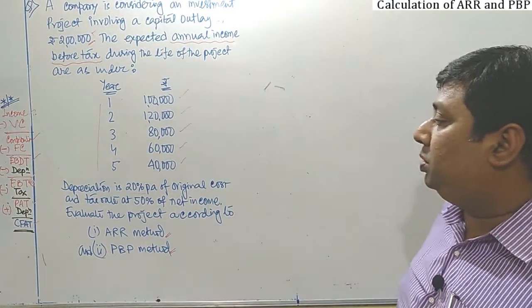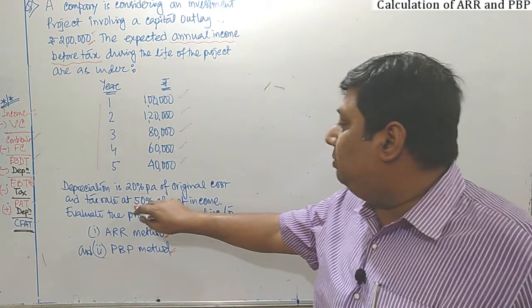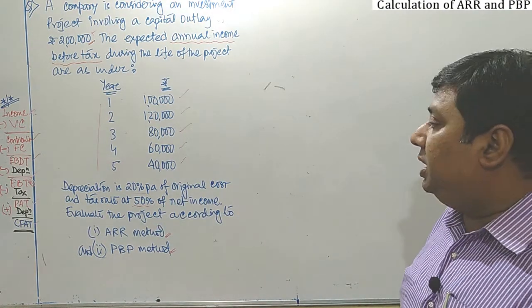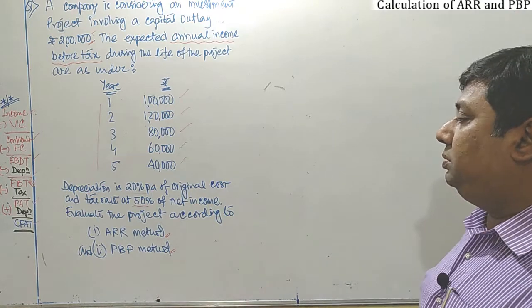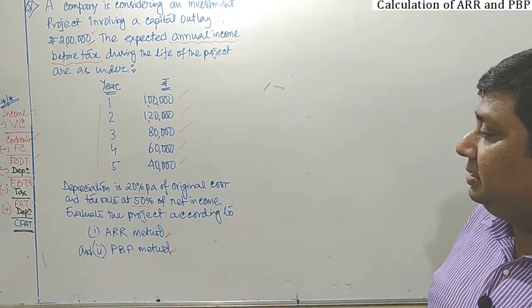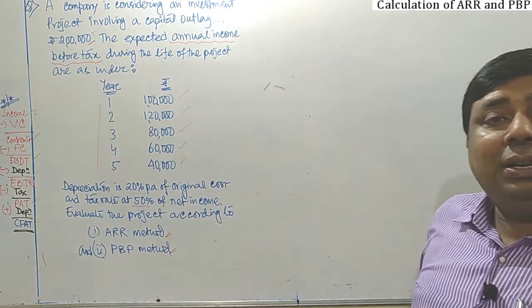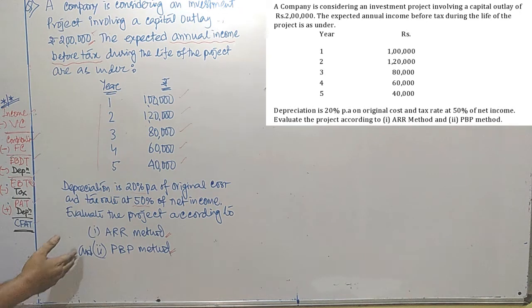The original cost of the project is 2 lakhs. The tax rate is 50 percent of net income — whatever EBT you get, 50 percent you have to pay to the government as tax. Evaluate the project according to ARR method and PBP method — we are going to calculate the accounting rate of return and the payback period of the project.